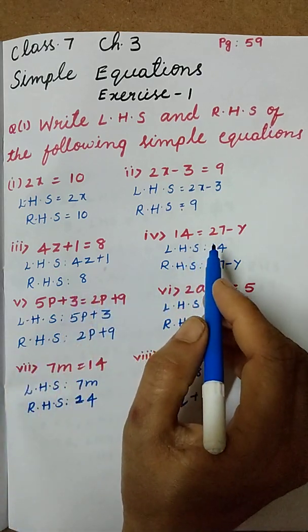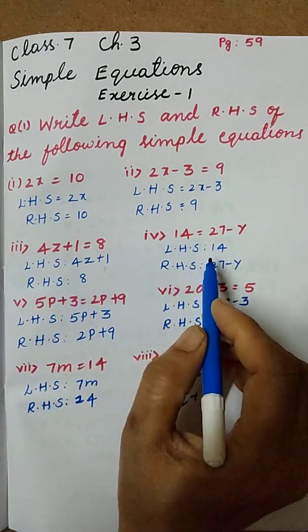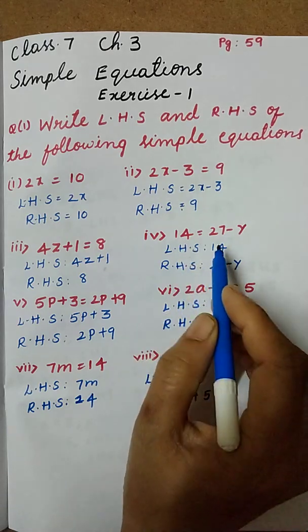Next question: 14 equal to 27 minus 5. Here LHS is 14 and RHS is 27 minus 5.